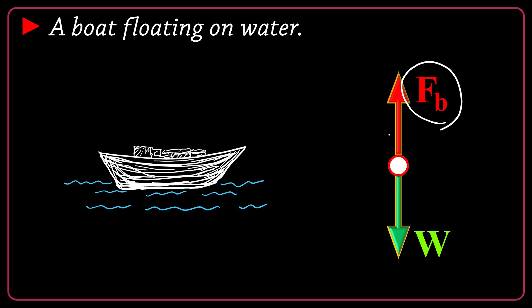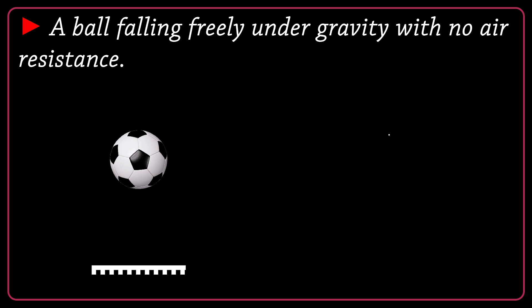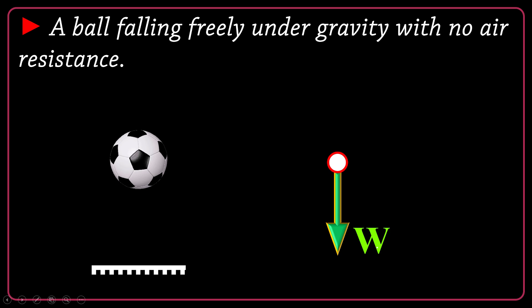Next: a ball falling freely under gravity with no air resistance. The ball falls due to the downward force of gravity, W. With no air resistance, there is no drag force acting on it. So W is the only force — a single downward arrow — to consider for that object.